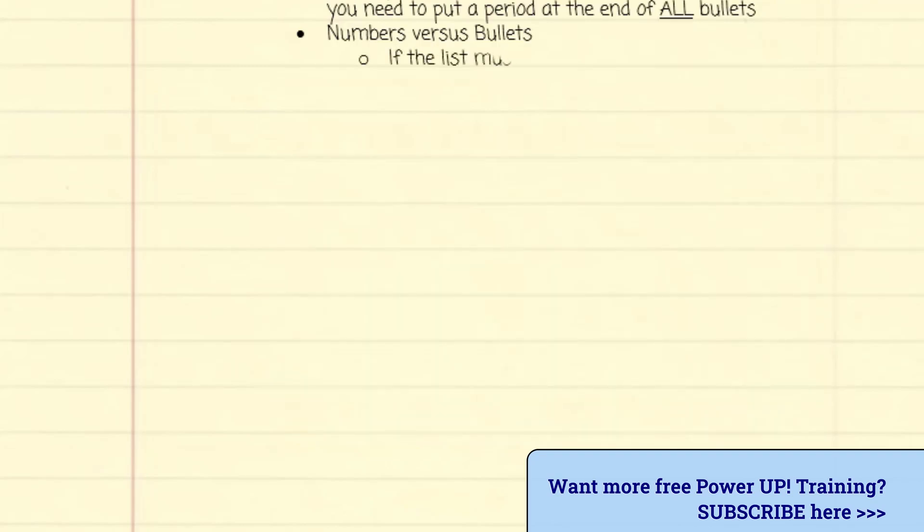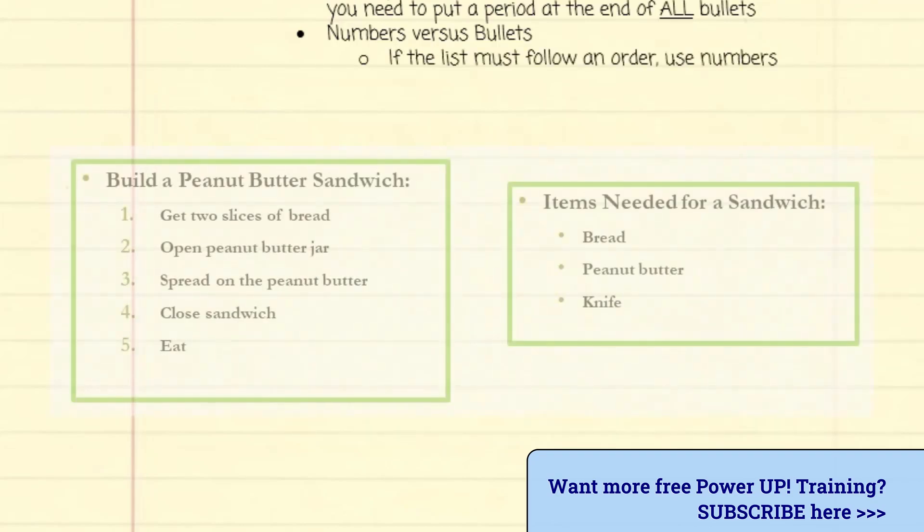Next, numbered lists versus bullet icons. This is easier than you might think. If the list must follow a specific order, like a sequence of events, then use numbers. Otherwise stick to bullet icons.